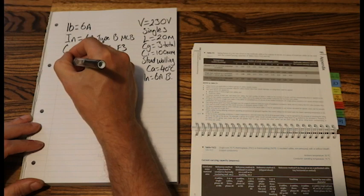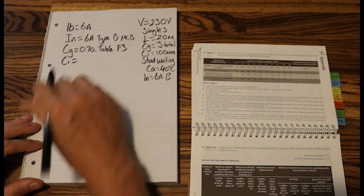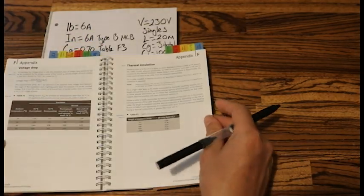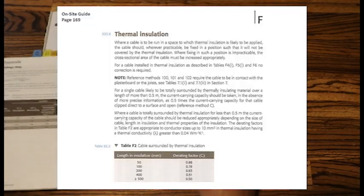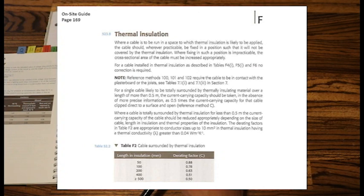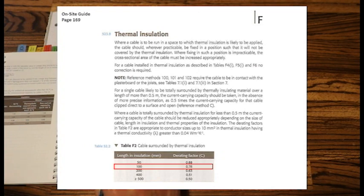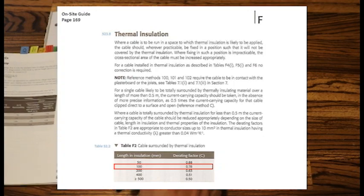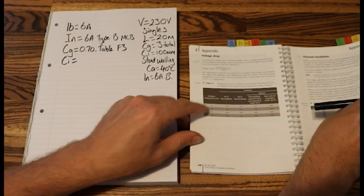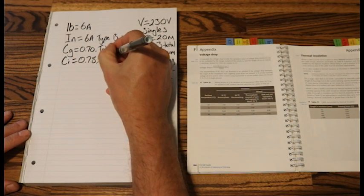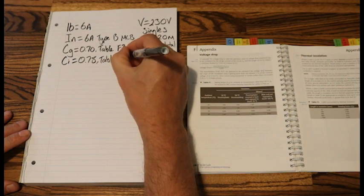Our next C factor was CI. And back to the on-site guide. That's on the page before, page 169. We're looking at table F2. Our question, it said our cable was surrounded at 100mm. And that gives a derating factor of 0.78. Let's write that down. 0.78. Table F2.